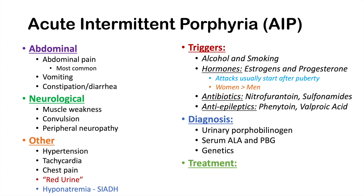Treatment involves avoiding triggers first and foremost to prevent acute attacks. If there is an acute attack, hemin can be used — hemin inhibits ALA synthase, thereby reducing levels of ALA and porphobilinogen, which are the causes of the neurovisceral symptoms.